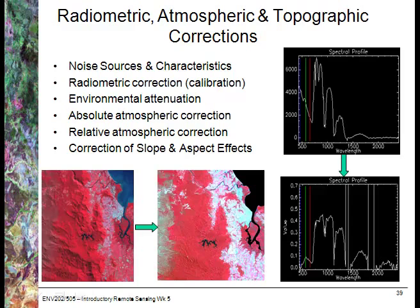On the right-hand side we have two different spectral profiles. The x-axis shows wavelength in nanometers and the y-axis on the upper graph shows digital number values — this is just what's retrieved by the sensor. To convert to at-sensor reflectance we first need to convert to radiance in real-world units, then remove the effects of the atmosphere. You can see that the profiles, although of the same feature, look considerably different after corrections.